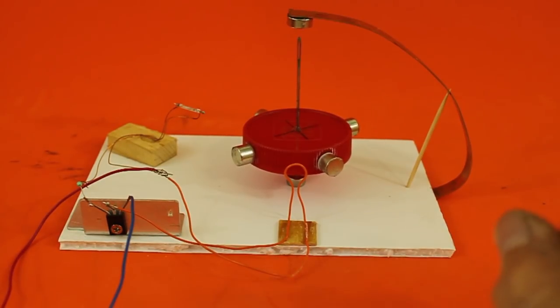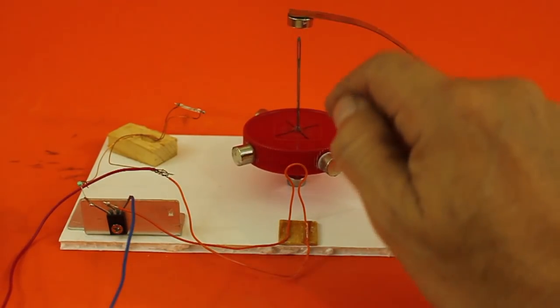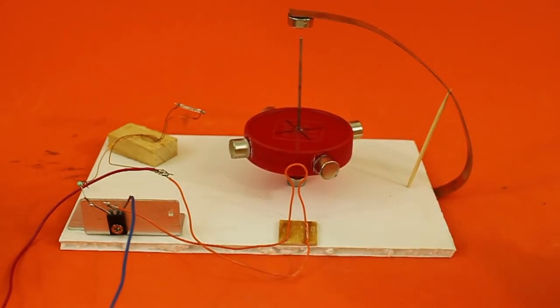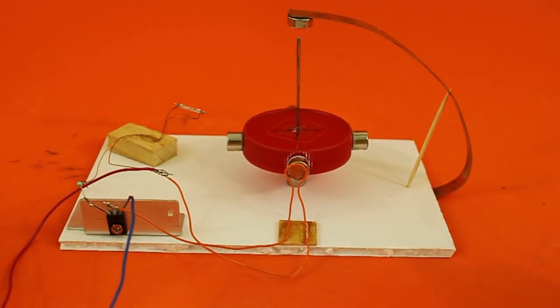This is done in order to reduce the amount of current and still have a strong enough magnetic field to turn the rotor. Well, their motors have currents in the order of microamps and that is pretty amazing.